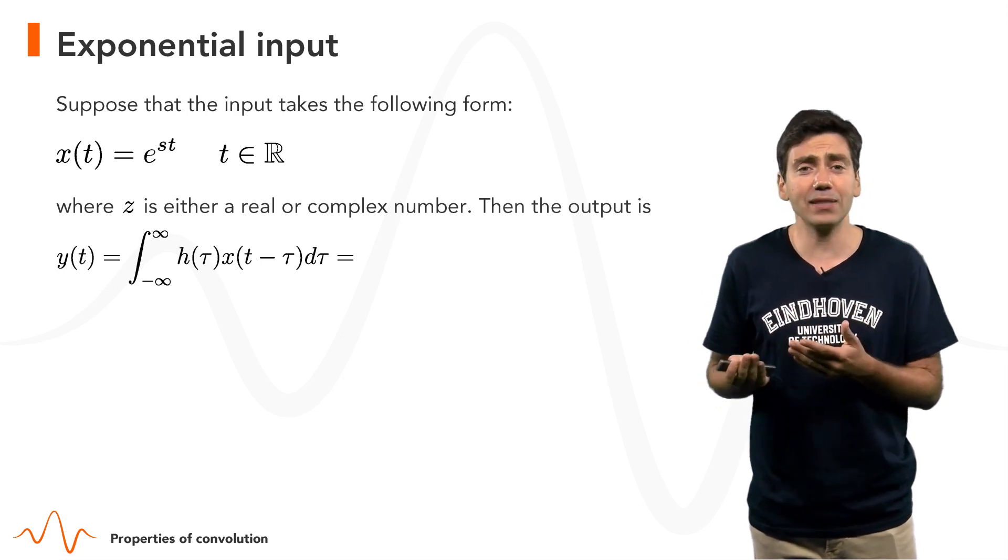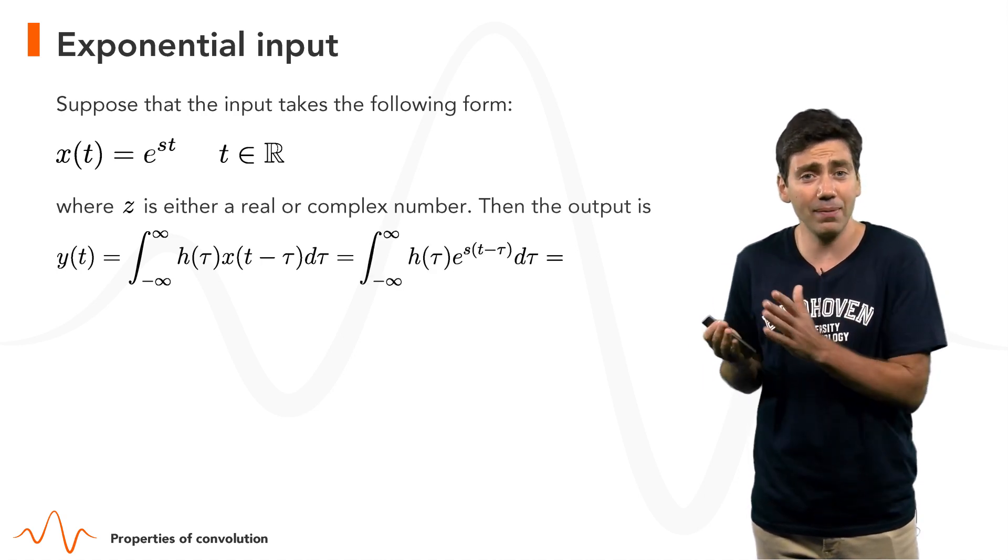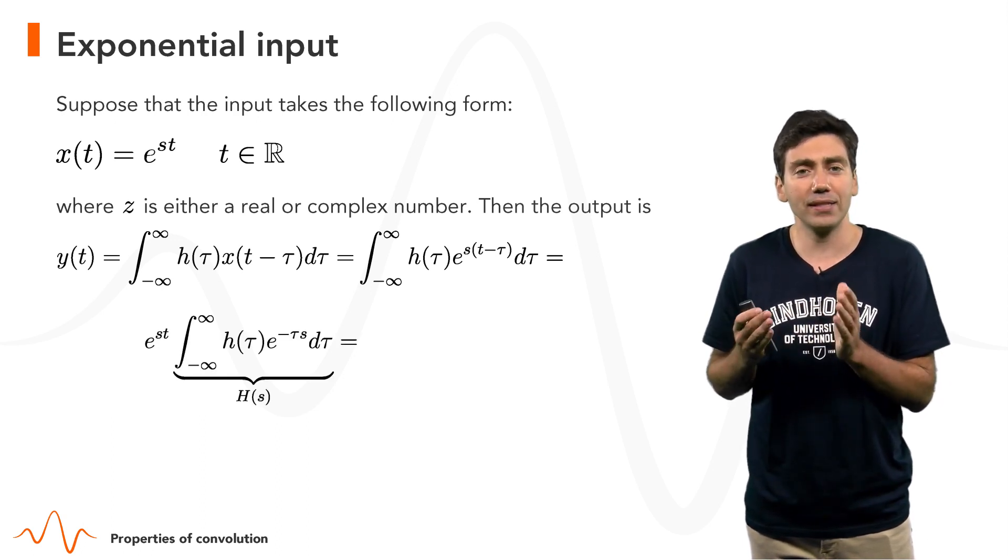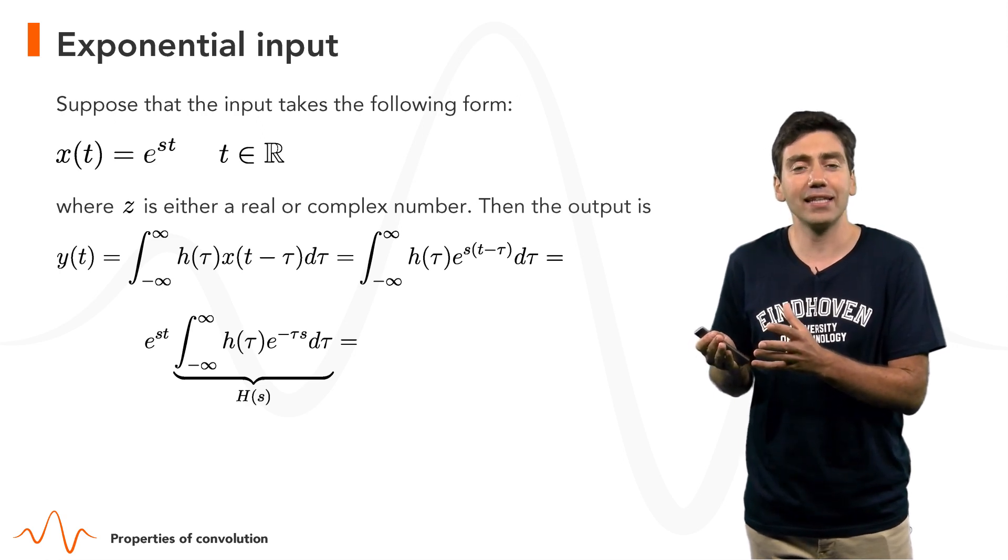Then if we replace x(t - τ) by e^(s(t-τ)), we see that we can decompose e^(s(t-τ)) as e^(st) times e^(-sτ).